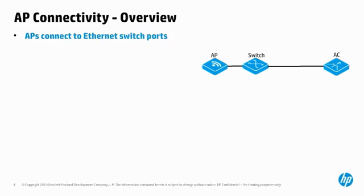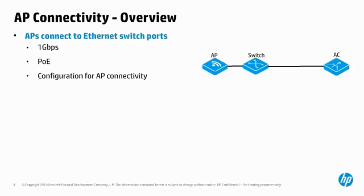APs are connected to Ethernet switchports. These Ethernet switchports should meet the following criteria: support for 1 gigabit per second, support for Power over Ethernet or PoE, proper switchport configuration to support AP connectivity, and proper uplink configuration to provide AP to AC connectivity. Let's explore these criteria in more detail.